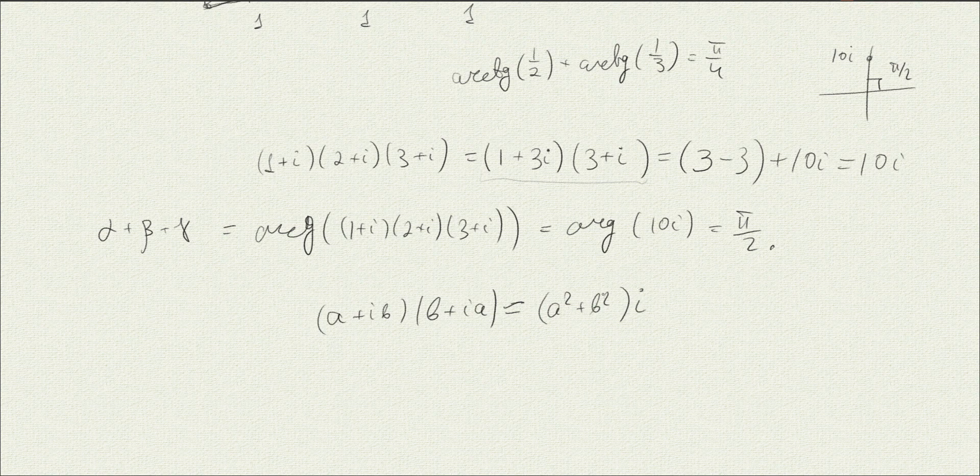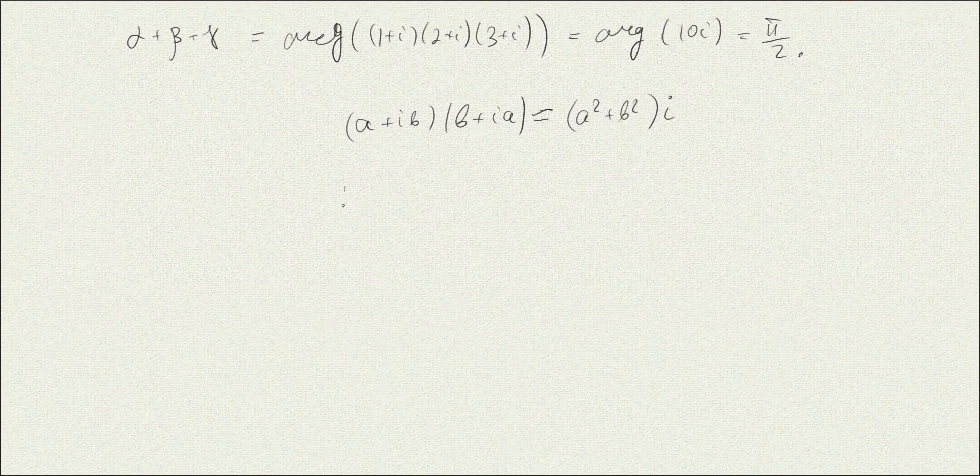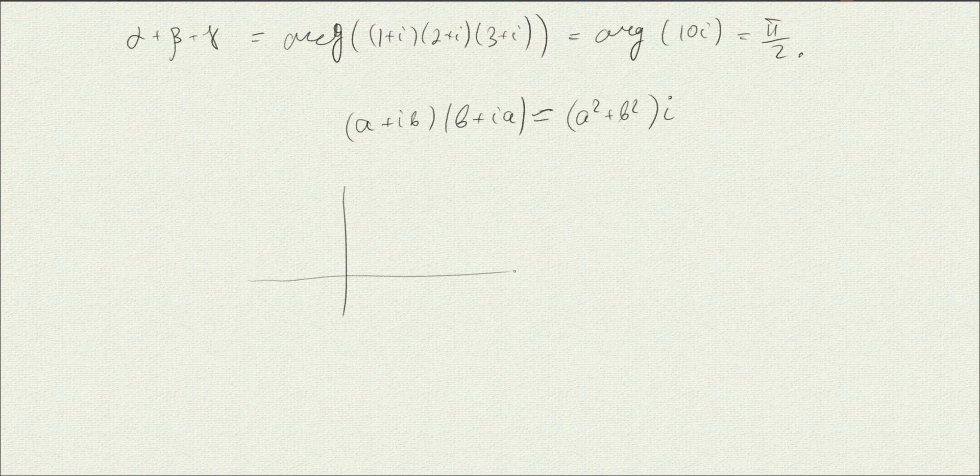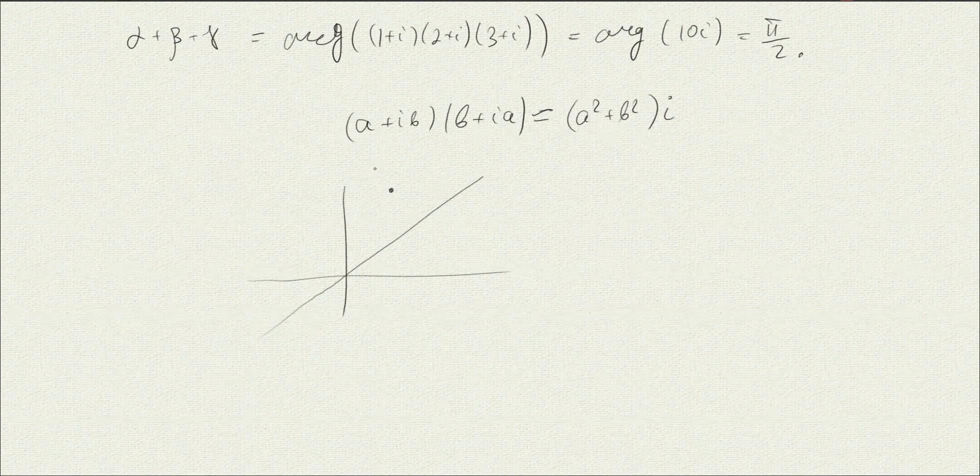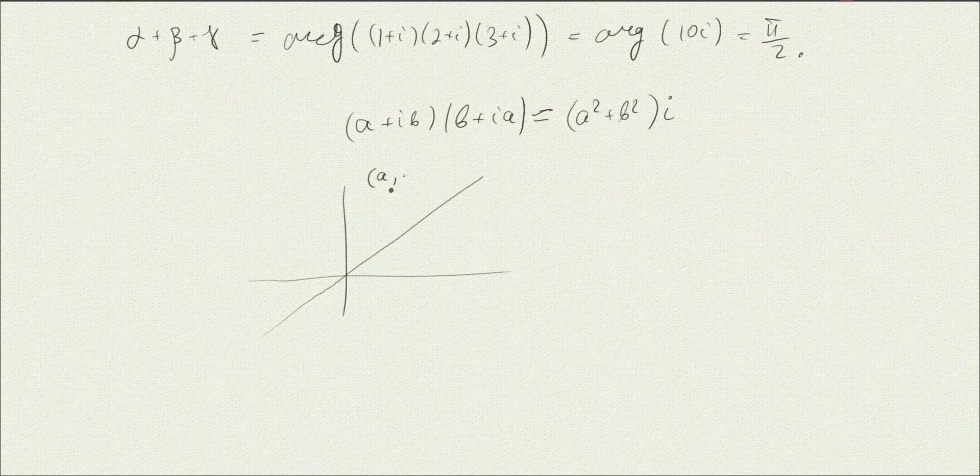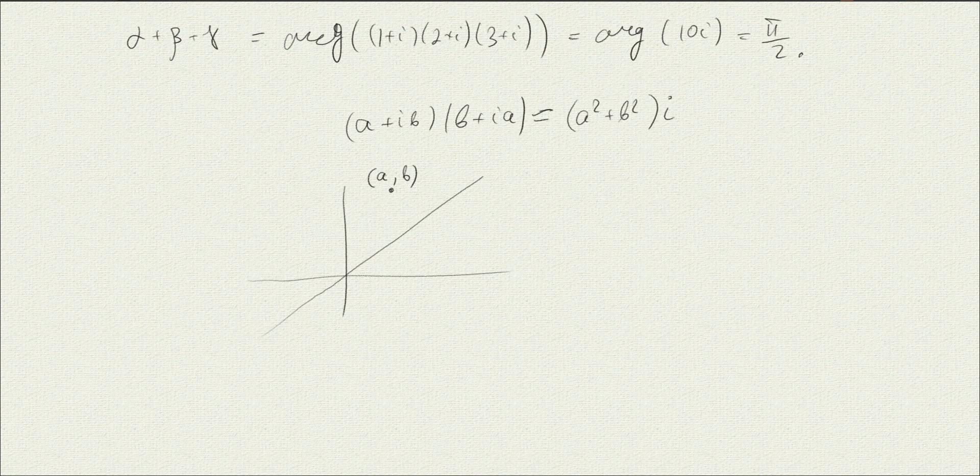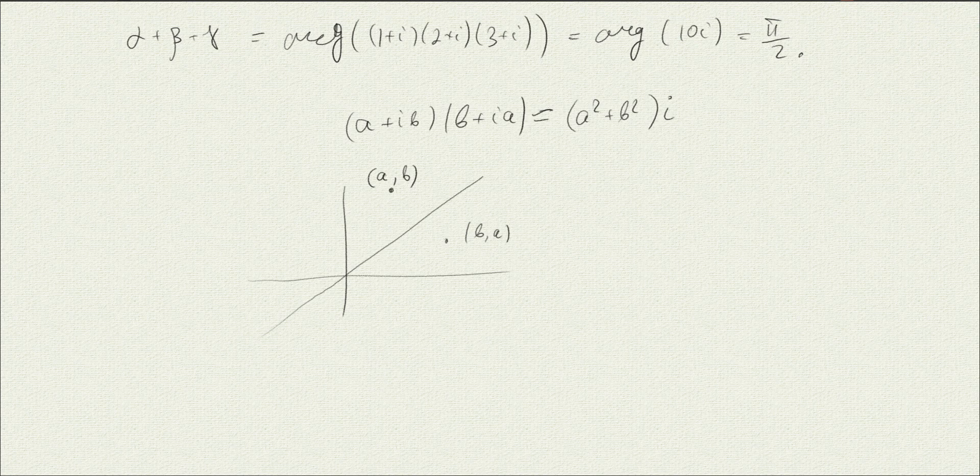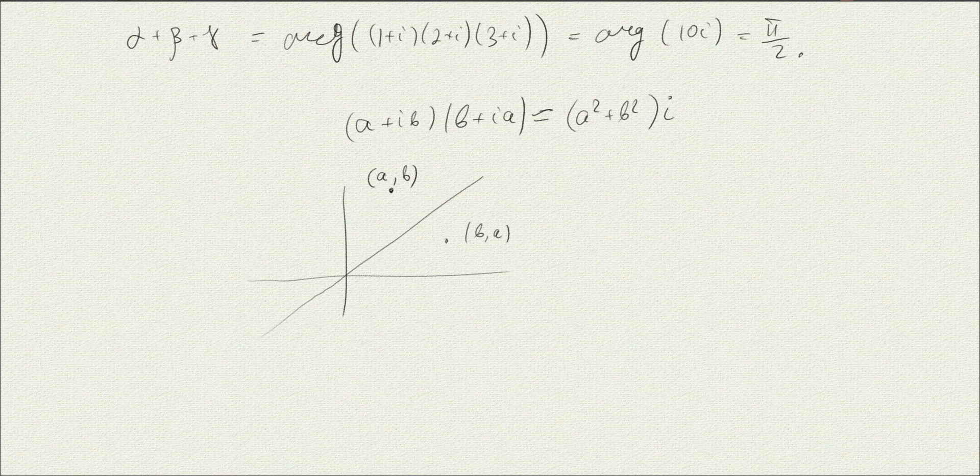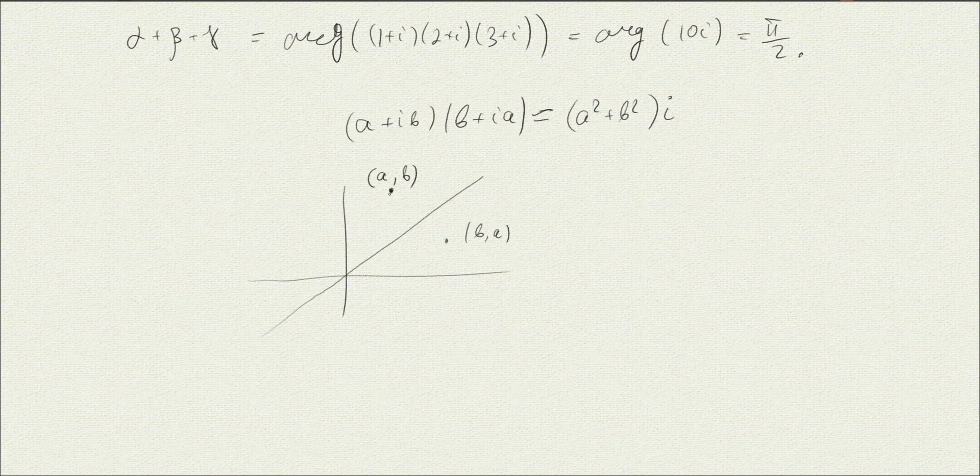But if we would like to see the reason for this, it's the following. If this is the line y equals x, and we take this point to be some point a, b, or it's equivalent to thinking of it as a complex number, then the point b, a is a reflection of this point relative to this line. It's a reflection with the same angle.